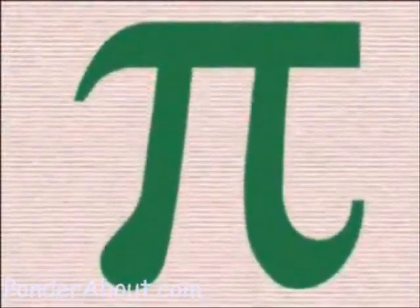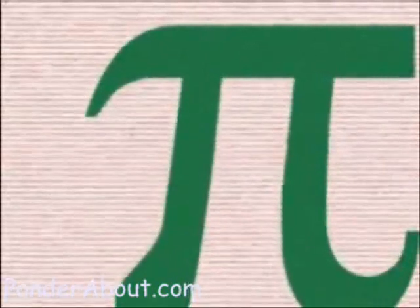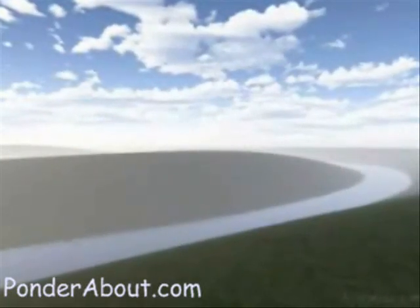Mathematical disc jockey Adam Spencer is a big, big fan of pi, a number that appears in the weirdest places. For example, take the sort of windy rivers that flow across gently sloping plains.